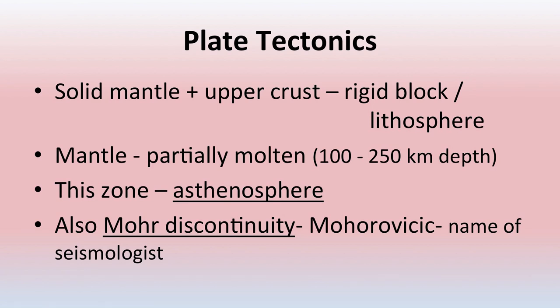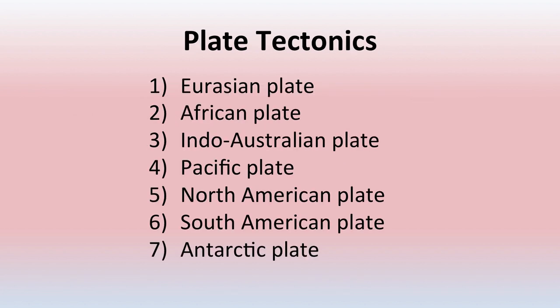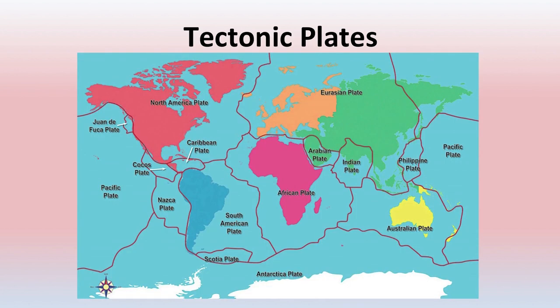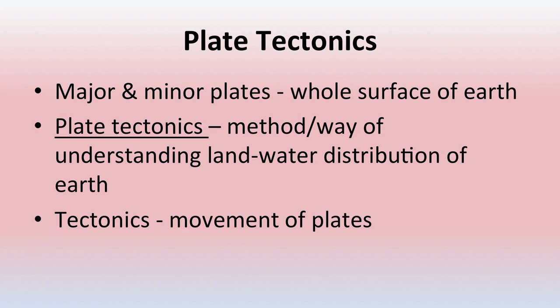Plate tectonics explains that the lithosphere is broken into several blocks known as plates, and these plates move over the asthenosphere. There are 7 major plates — their names can be seen in the picture — and 20 minor plates, with a few examples given. These major and minor plates encompass the whole surface of the earth, and this way of understanding the land and water distribution is known as plate tectonics, where tectonics means movement of plates.